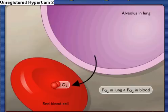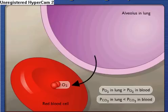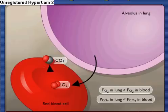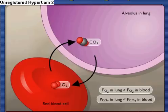Also, the partial pressure of carbon dioxide, PCO2, in the air in the lungs is less than the PCO2 in the blood, so carbon dioxide diffuses out from red blood cells and into the air in the lungs.